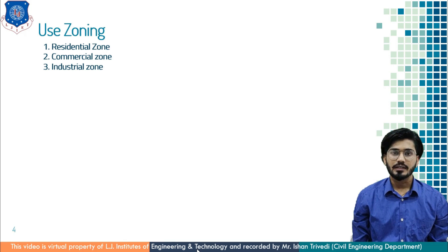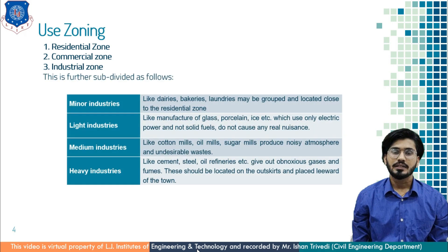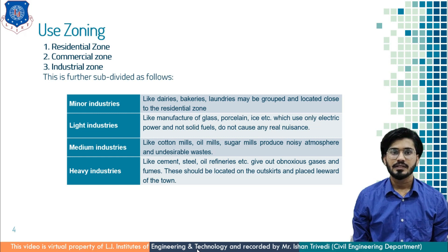Next is industrial zone. We need to take great care while determining the location of the industrial zone. This zone should be planned in the leeward direction of a town so that dangerous gases can pass without disturbing the town and its atmosphere. Industries are classified in various categories. First, minor industries such as dairy, bakery and laundry, where groups of people are engaged. These are located close to the residential zone and are essential for day-to-day life.